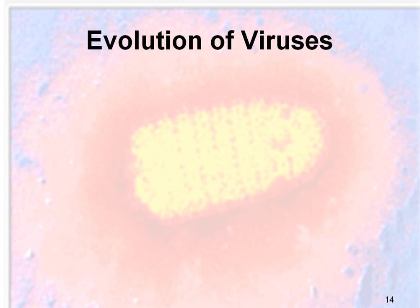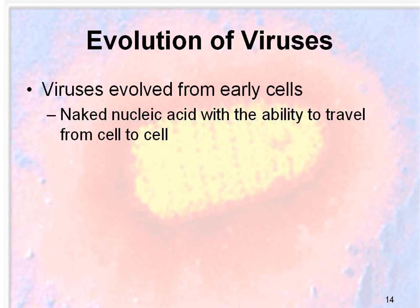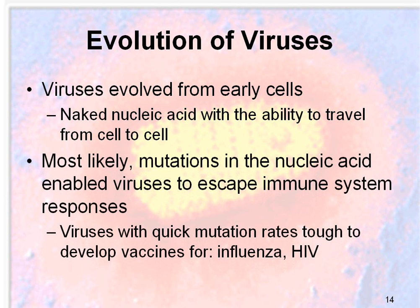Viruses have evolved from early cells. They are basically a naked nucleic acid with the ability to travel from cell to cell. Most likely, mutations occurred in the nucleic acids that enabled viruses to escape immune system responses. Viruses with quick mutation rates are tough to develop vaccines for — including the flu and HIV — which is why they're not cured yet, because they mutate so quickly that we simply can't keep up in our efforts to develop effective vaccinations.